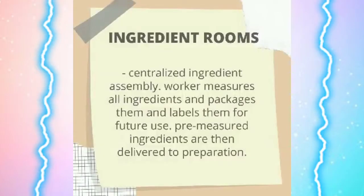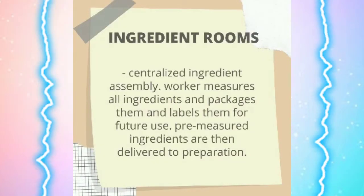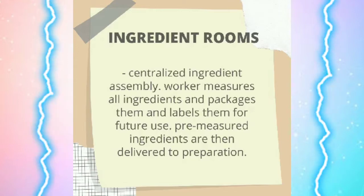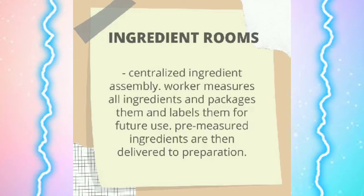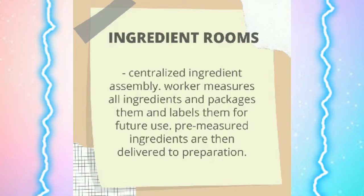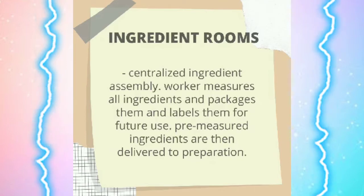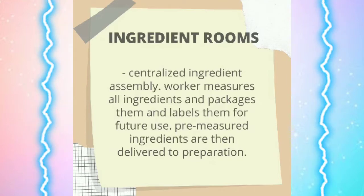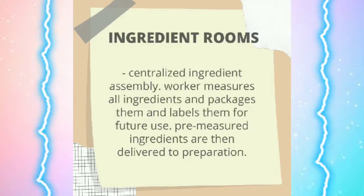Ingredient rooms measure centralized ingredient assembly. A worker measures all ingredients, packages them, and labels them for future use. The pre-measured ingredients are then delivered to the preparation area.